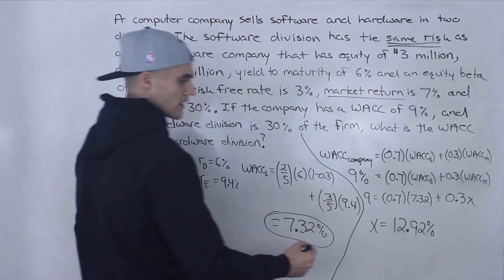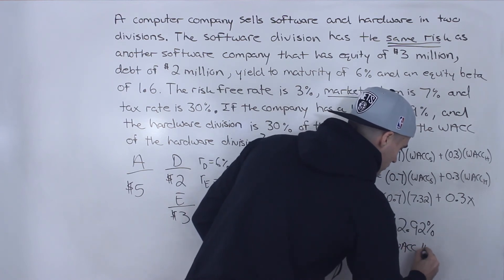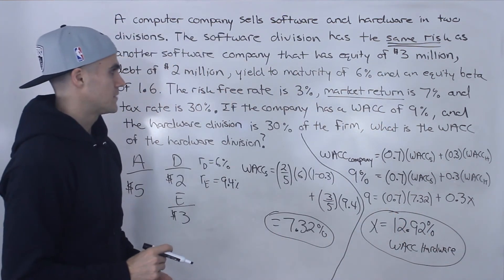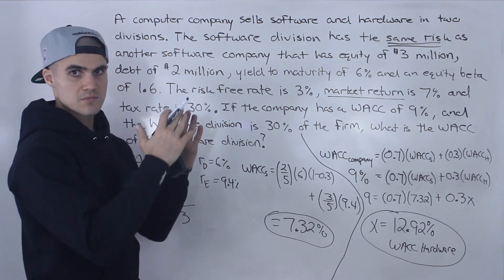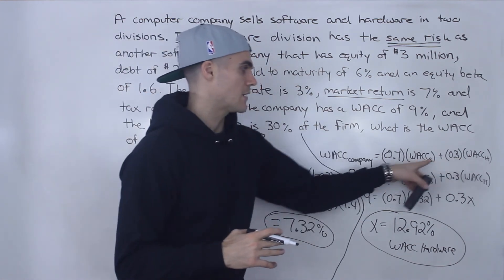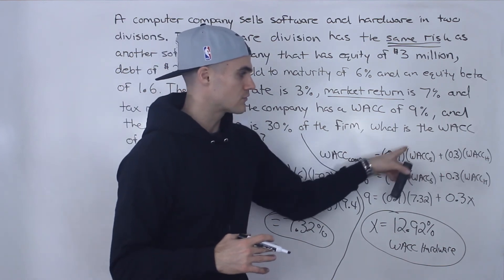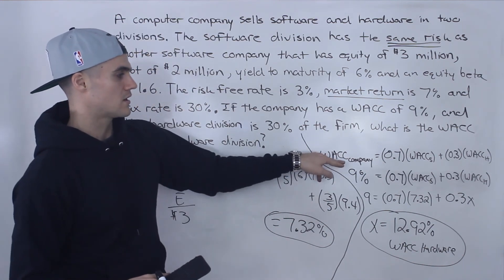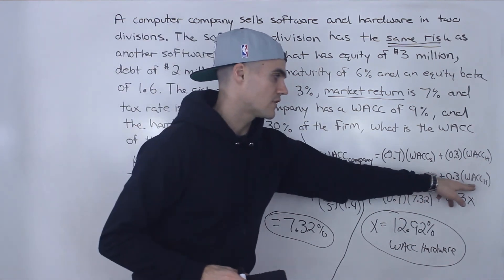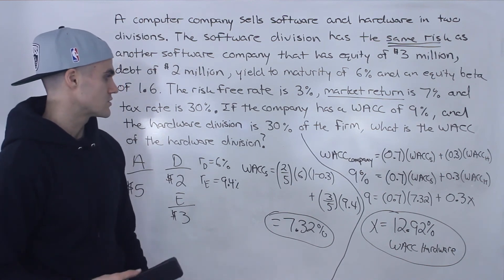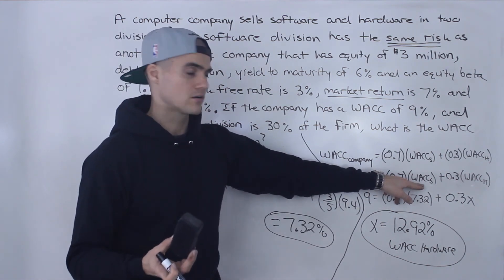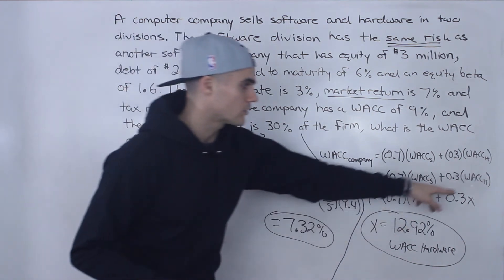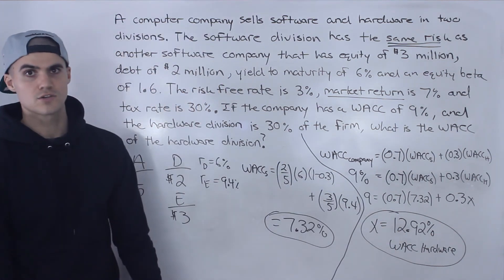So that is the final answer — 12.92% is the weighted average cost of capital for the hardware division. Basically, this question had a company split into two divisions, each with their own WACC. The weighted average of those two divisional WACCs gives the overall company WACC. We were given the company WACC and had to find the hardware division's WACC, which required first calculating the software division's WACC using a comparable company with the same risk.